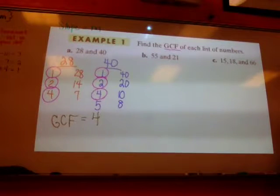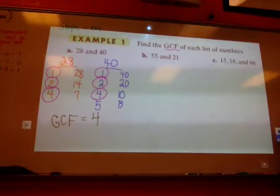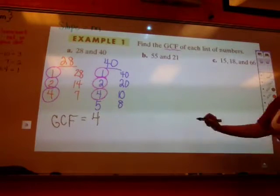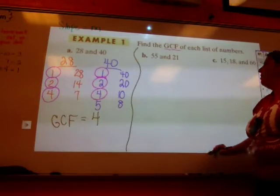So that's my greatest common factor. I would say the greatest common factor of 28 and 40 is 4. All right, let's look at B.